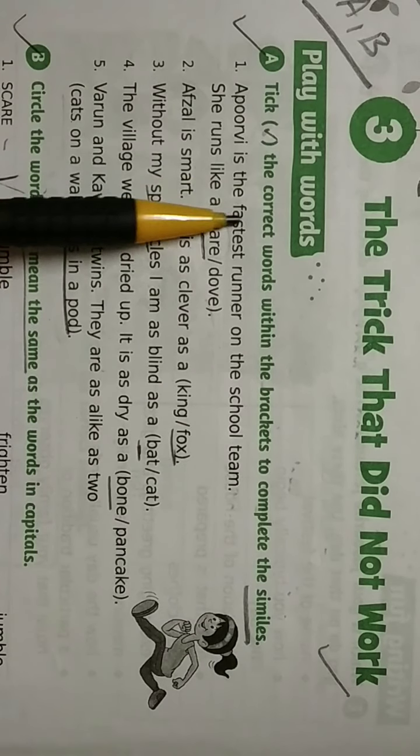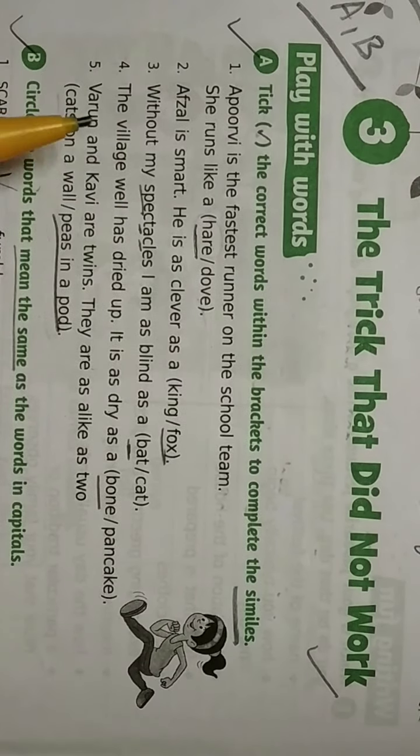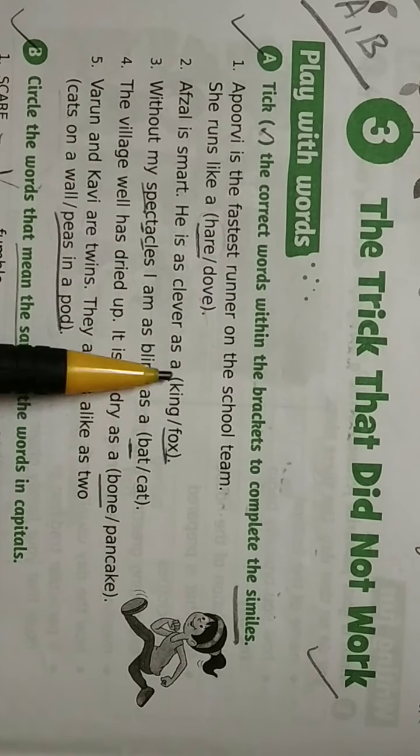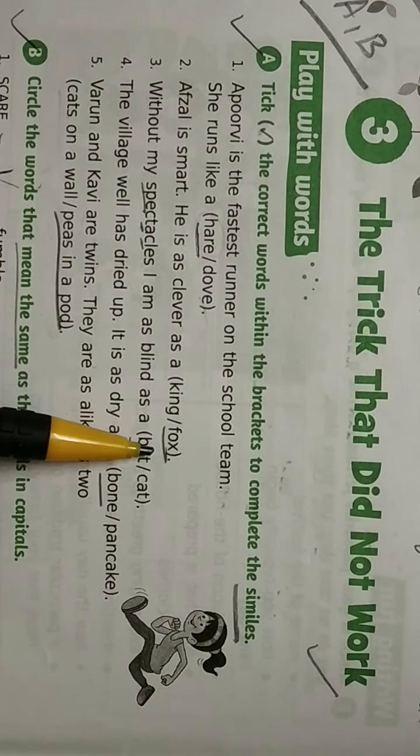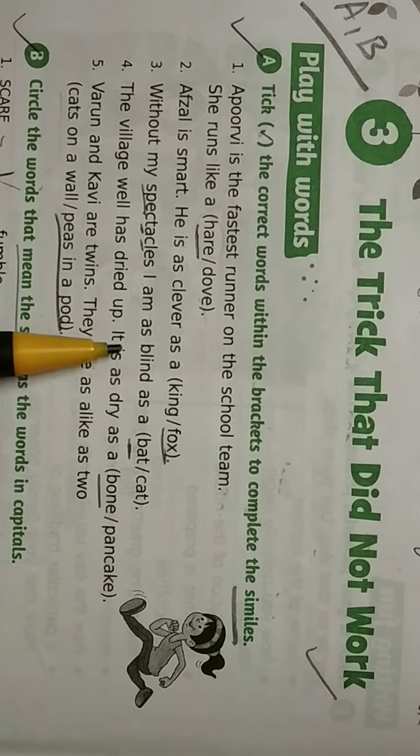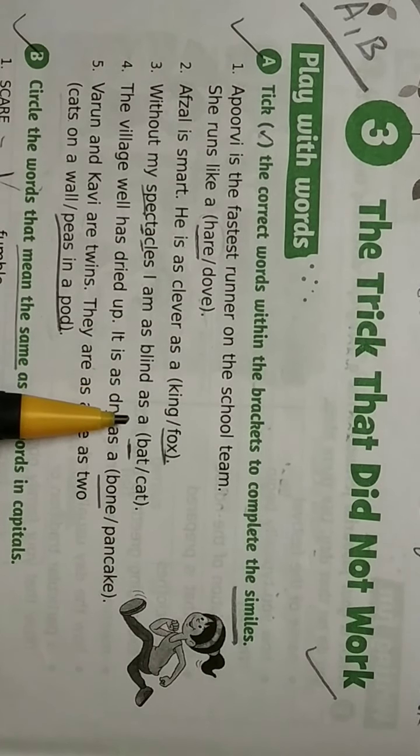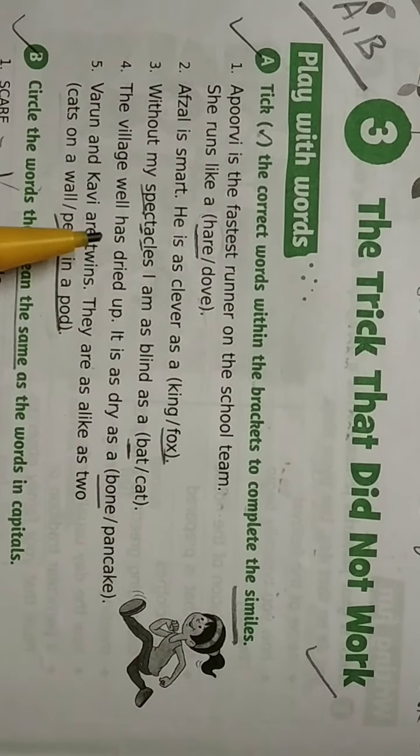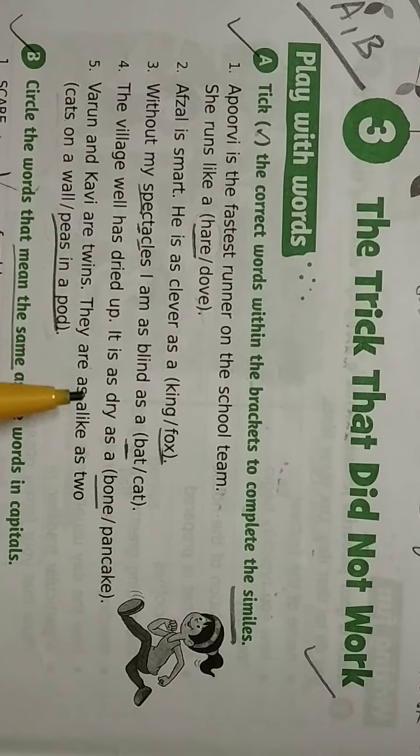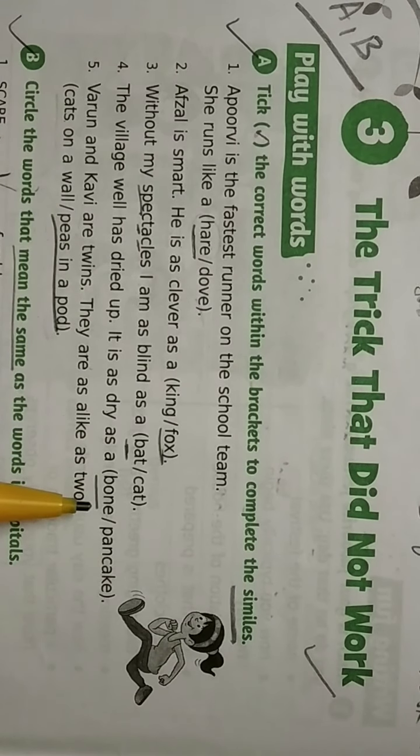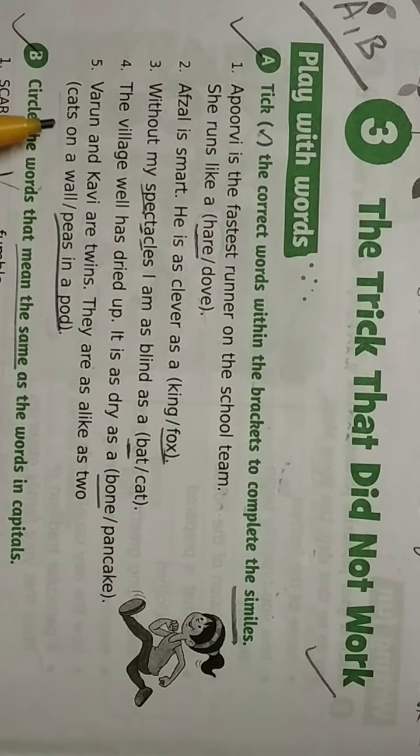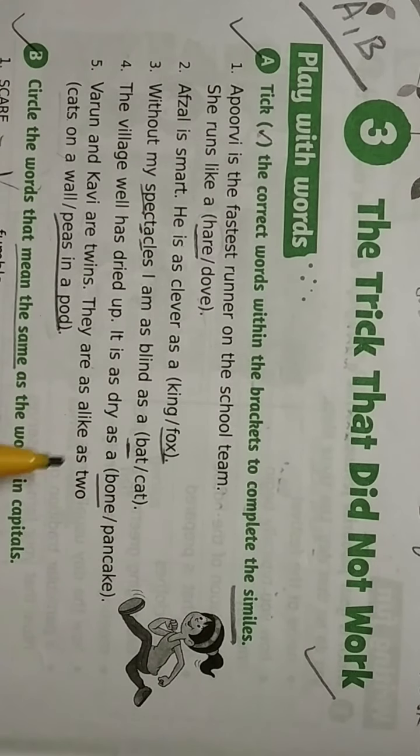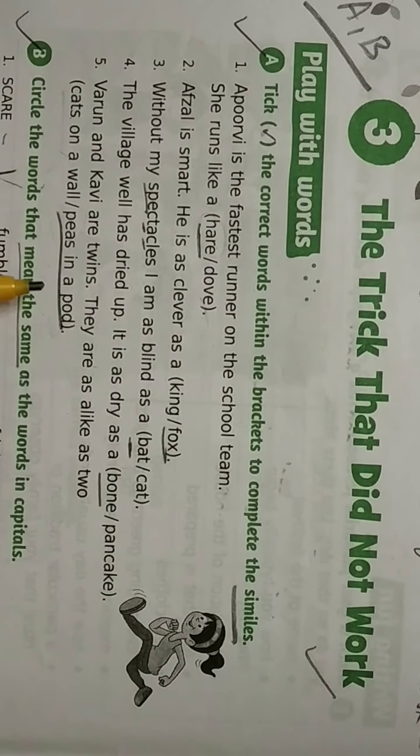As fast as a hare. Afzal is smart. He is as clever as a fox. Without my spectacles, I am as blind as a bat. The village well has dried up. It is as dry as a bone. Varun and Kavi are twins. They are as alike as two peas in a pod.